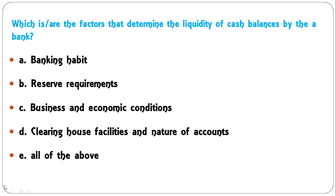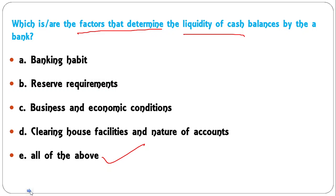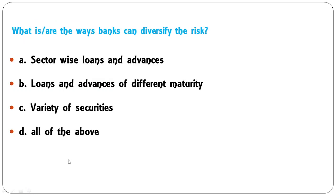Which are the factors that determine the liquidity of cash balances held by a bank: banking habits, reserve requirements, business and economic conditions, clearing house facilities and nature of accounts, or all of the above? All four are factors that determine liquidity of cash balances in a bank, so E is the correct answer.